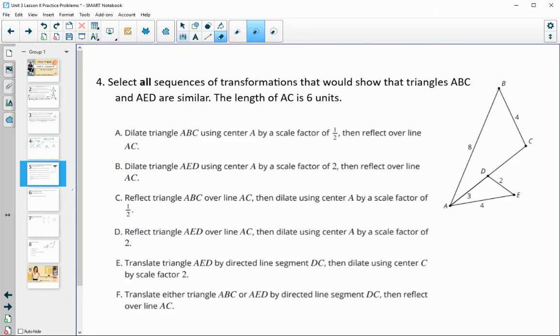All right, number 4 wants us to select all transformations that would show that triangle ABC and ADE are similar, and then it also tells us the length of AC is 6. So this first one says that we could dilate this larger triangle by a scale factor of a half, so bring it to half its size. And so if we did that, we know that all the side lengths would match the measurements of AED since we had 8 down to 4, 4 down to 2, and 6 down to 3. And then it's saying we could reflect it over line AC, and then we can see that that would land on this other one, so that would prove similar.